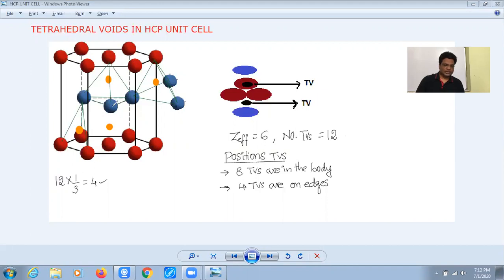So there are two like this. If a line joining these atoms is taken within the body, there are two tetrahedral voids found on it. And remaining six positions will be observed like this way.